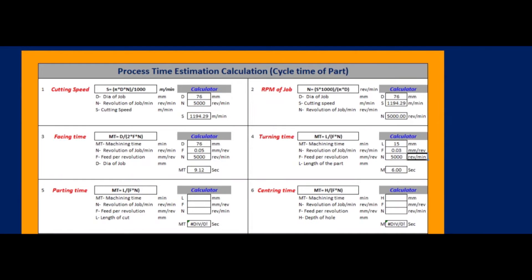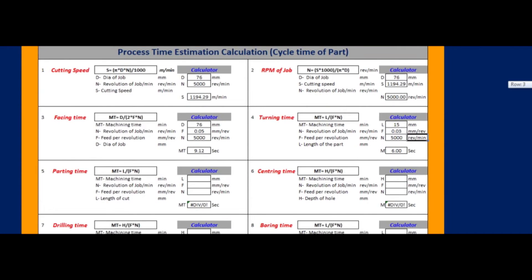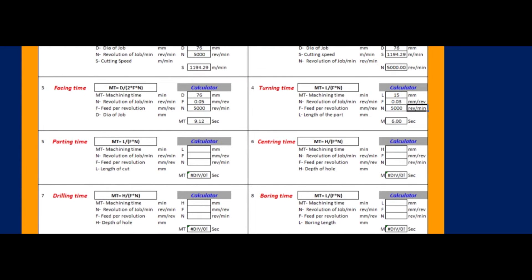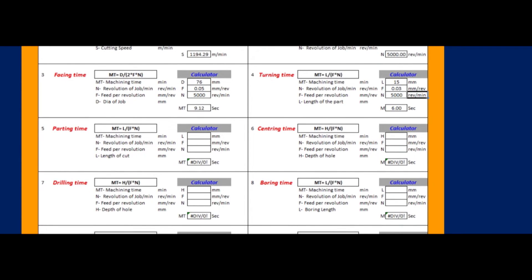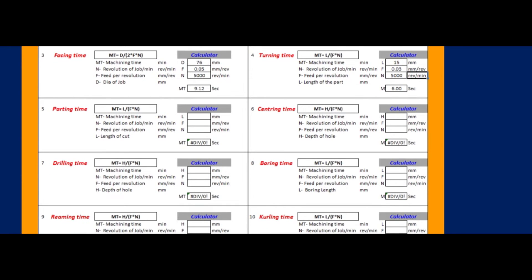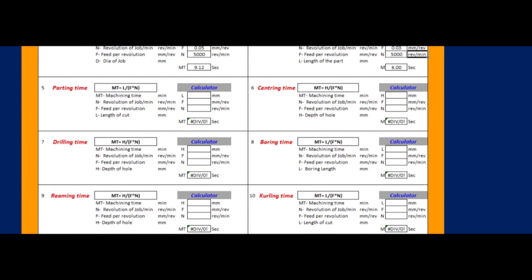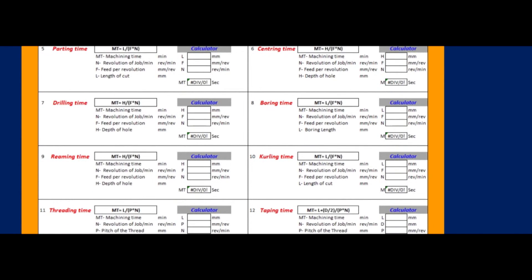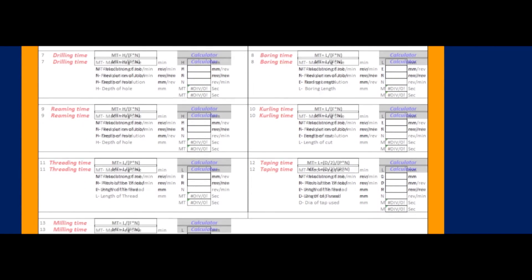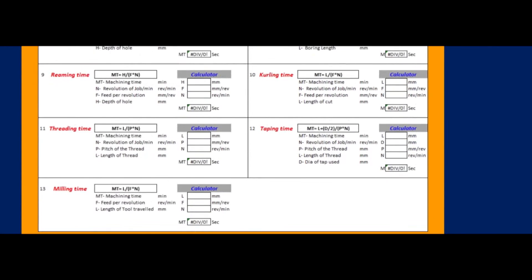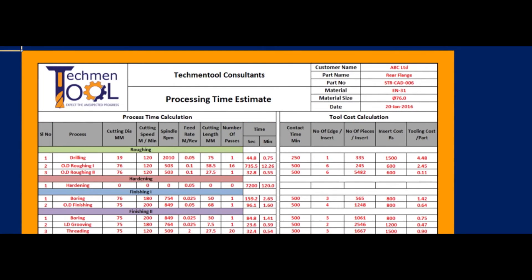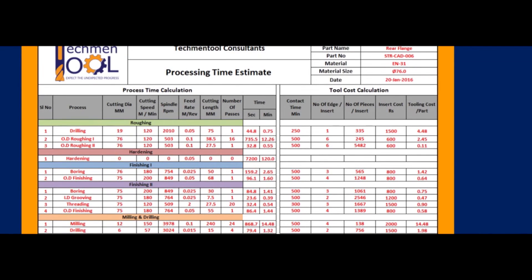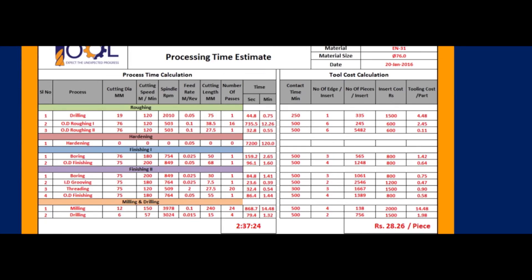Cycle time of the job is calculated using the measuring time of different operations. Here you can see that calculation steps of measuring time for different operations have been given. The operation-wise processing time estimation is made in seconds as well as in minutes. By adding all these timings we can get the total time required for the complete operation of the product.